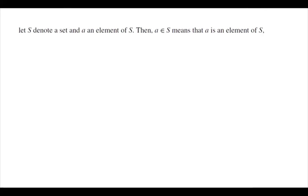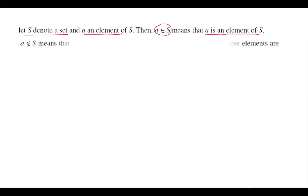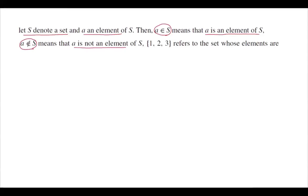Let us take a look at some set theory notation and symbols to help us prove properties for probabilities. Suppose S is a set and a is a member of set S, then we write 'a belongs to S' — it means that a is an element of S. However, if a is not a member of S, we write it as 'a is not in S,' meaning a is not a member of set S.